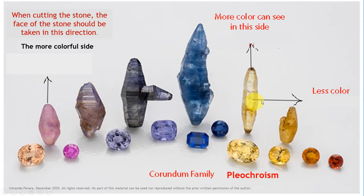This side is the pleochroism — we can see more color than the other direction. When we are cutting gemstones, the gemstone table, the face, should be oriented to this pleochroism side, not the other side. Everybody should cut stones through the pleochroism side. We have to orient the table to that side — then we can get a more colorful stone. If we cut the stone with the table given to the Z axis side, the color is very, very weak and the price is also very low. Buyers know about pleochroism and will not buy such stones.